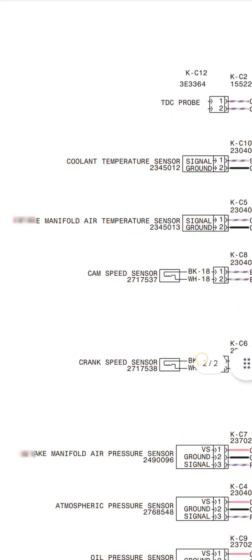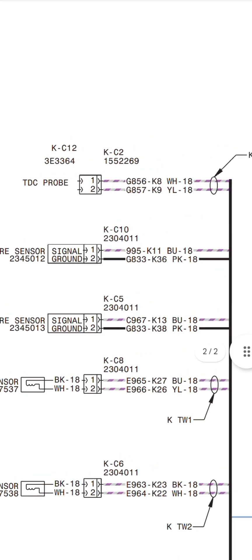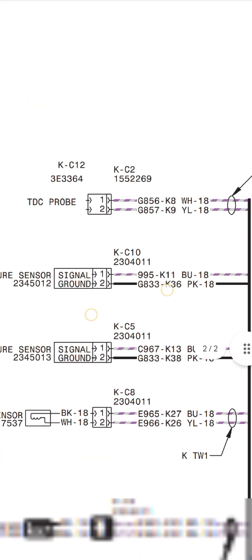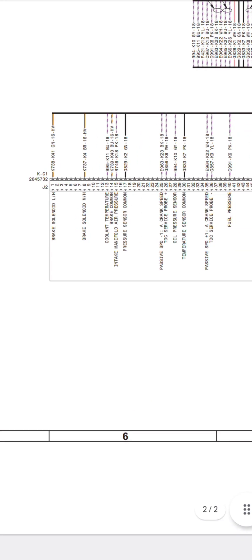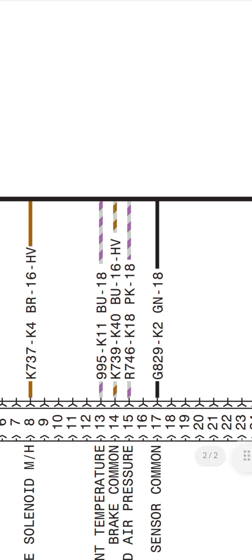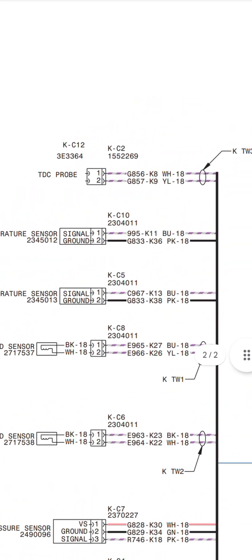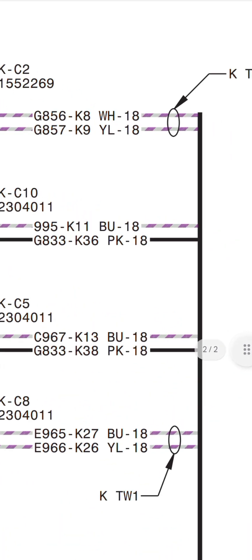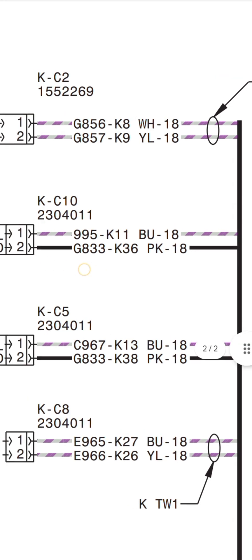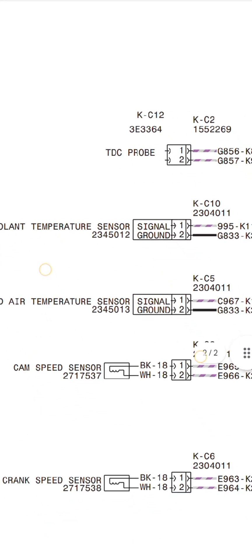As you can see, this connector goes to the sensor — your temperature sensor. If you want to figure out KC10, this connector in the ACM is the cooling temperature sensor. Pin number 13 goes to connector 995 K11, then to BU18 connector, which uses white and pink wires. The cooling temperature sensor BU18 comes here and connects to connector 995 K11. Pin 5 is the signal and the other pin is ground — pin numbers one and two.